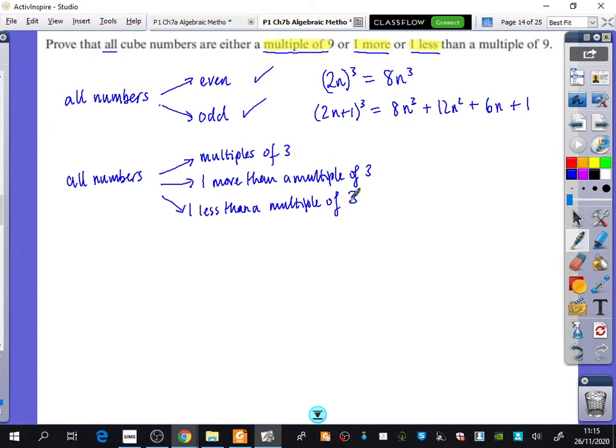So it is proof by exhaustion. We're going to exhaust all the options. For example, if you think of the number 7, it would be 1 more than a multiple of 3. What would be an example of 1 less than a multiple of 3? 8. That covers all the numbers. We're going to write these algebraically: multiples of 3 are 3n, 1 more than a multiple of 3 is 3n plus 1, and 1 less is 3n minus 1. I would say consider the multiples of 3.